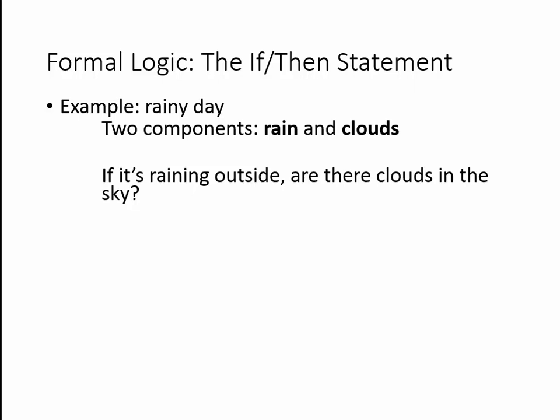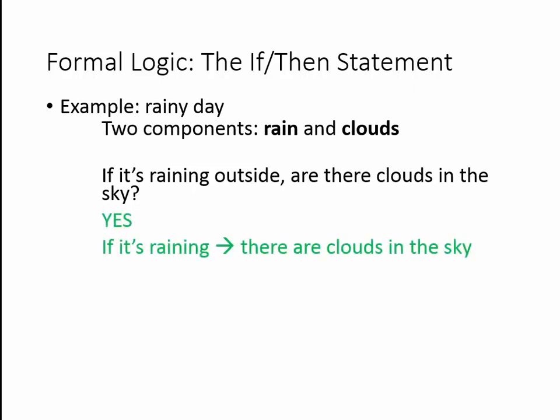If you just think about that for a second, the answer is yes. If it's raining out, there are definitely clouds somewhere in the sky — you can't have rain on a perfectly clear day. Therefore, rain is sufficient to know that there are clouds in the sky, and clouds are necessary for rain. The sufficient term leads to the necessary term.